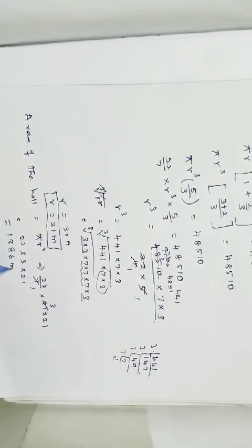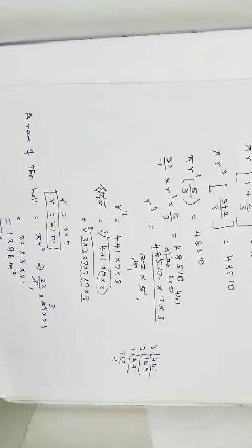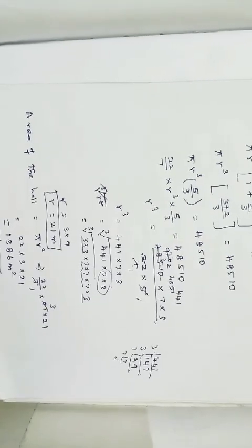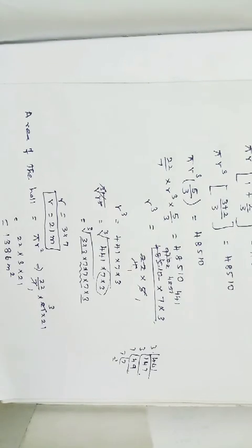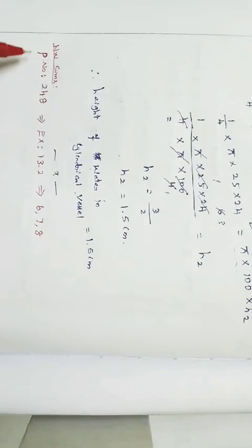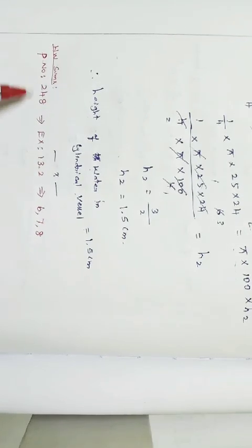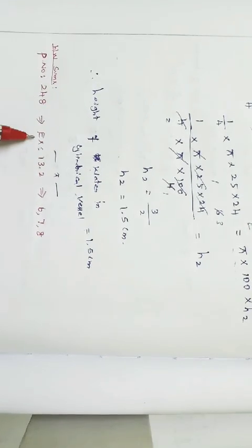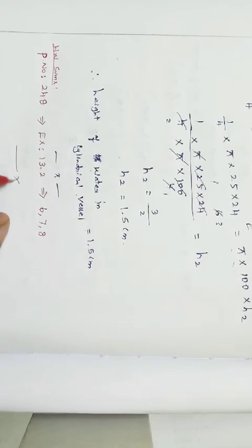That's all for today. The homework is from the NCERT book, page number 248, exercise 13.2, sum numbers 6, 7, and 8. Thank you.